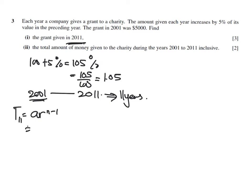Therefore, A is the initial grant, which is 5000, multiply by R, which is the multiplier 1.05 and 11 minus 1. So 5000 times 1.05 to the power of 10.